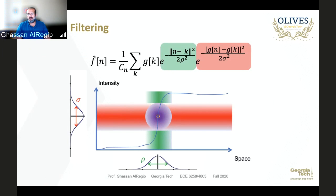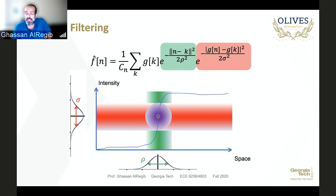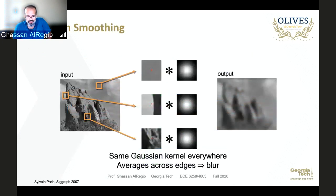There is also an ad hoc approach: you can get all the edges first, smooth the entire image, and then add the edges back afterwards. The assumption there is that the edges are noise-free, which is a big assumption in many cases, but it is another ad hoc approach.